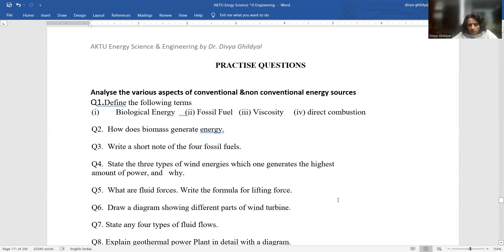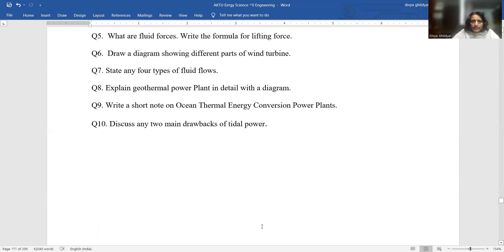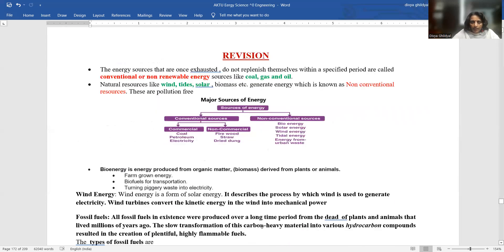What are your general practice questions for this unit? Define the following terms: Biological energy, fossil fuel, viscosity, combustion. How does biomass generate energy? Write a short note on fossil fuel. State the three types of wind energies. What are fluid forces? What is the formula for lifting force? Draw a diagram for wind turbine. State the types of wind turbines. Write a short note on ocean thermal energy conversion power plant. Discuss the drawbacks of tidal power.